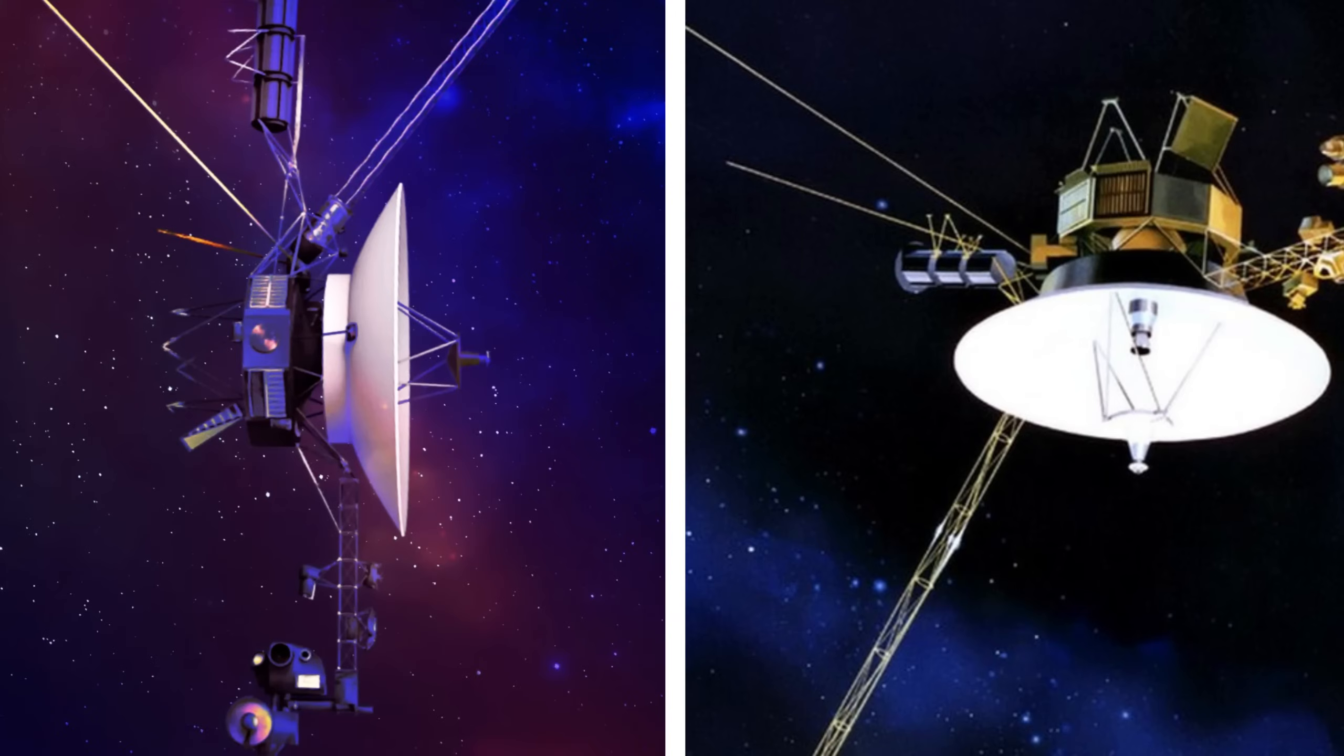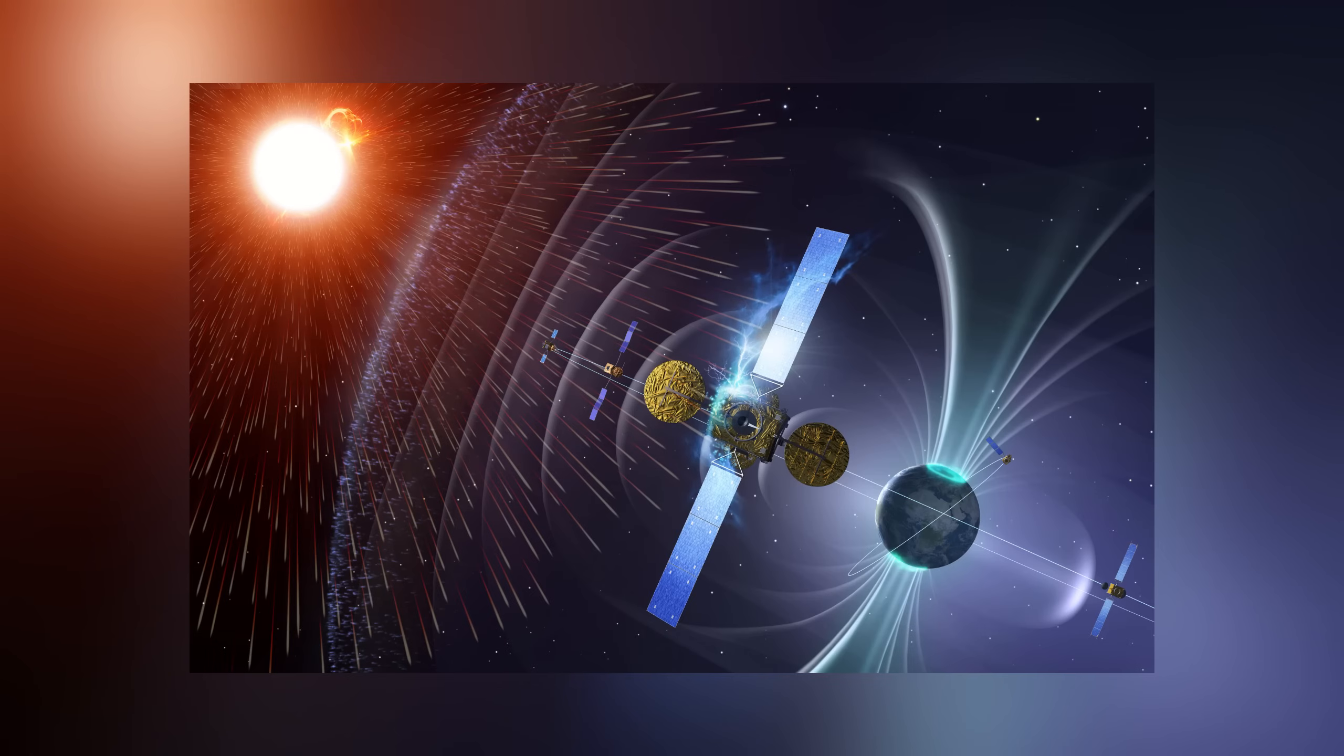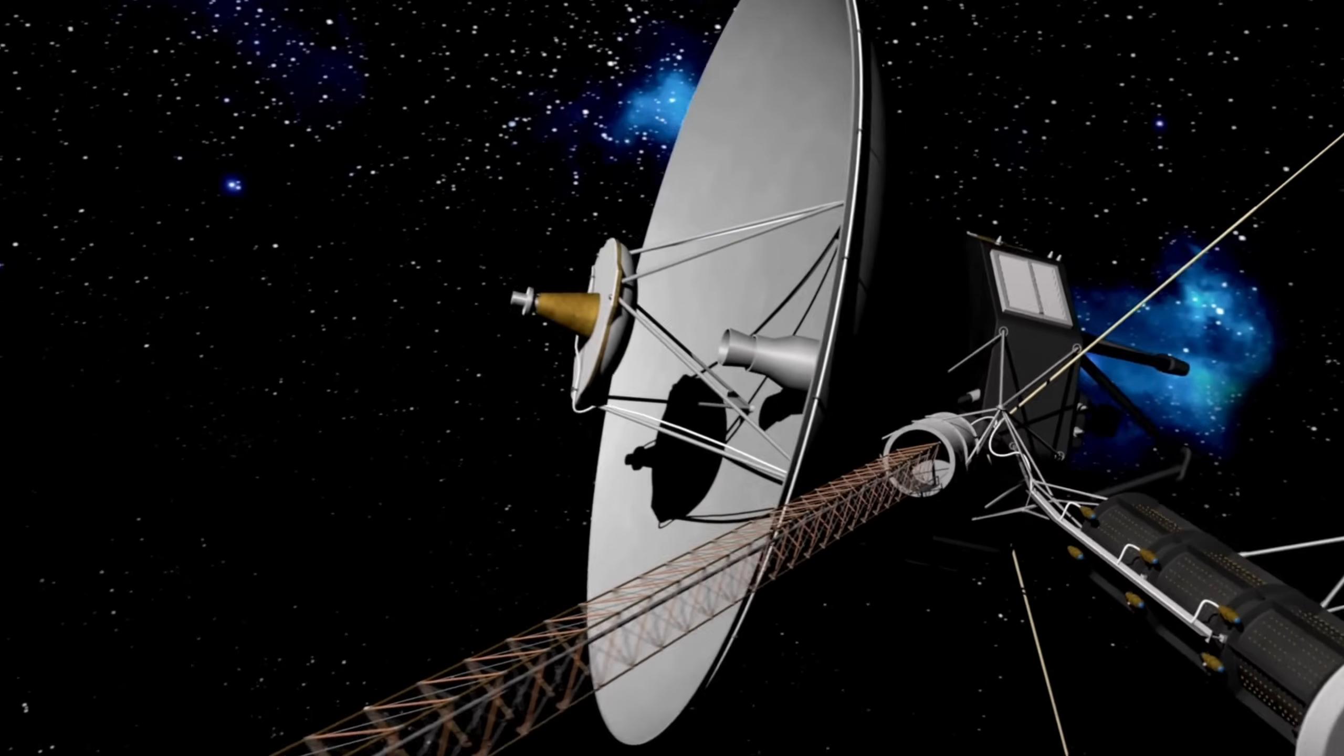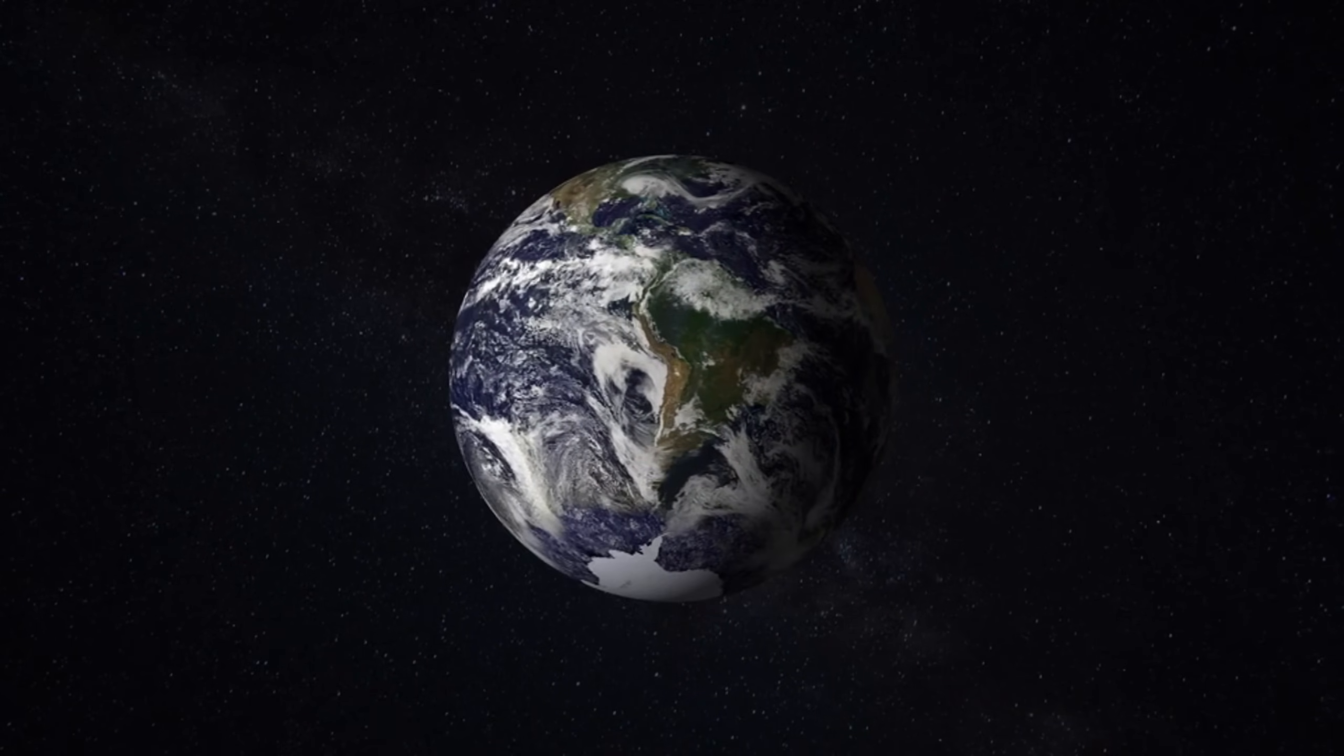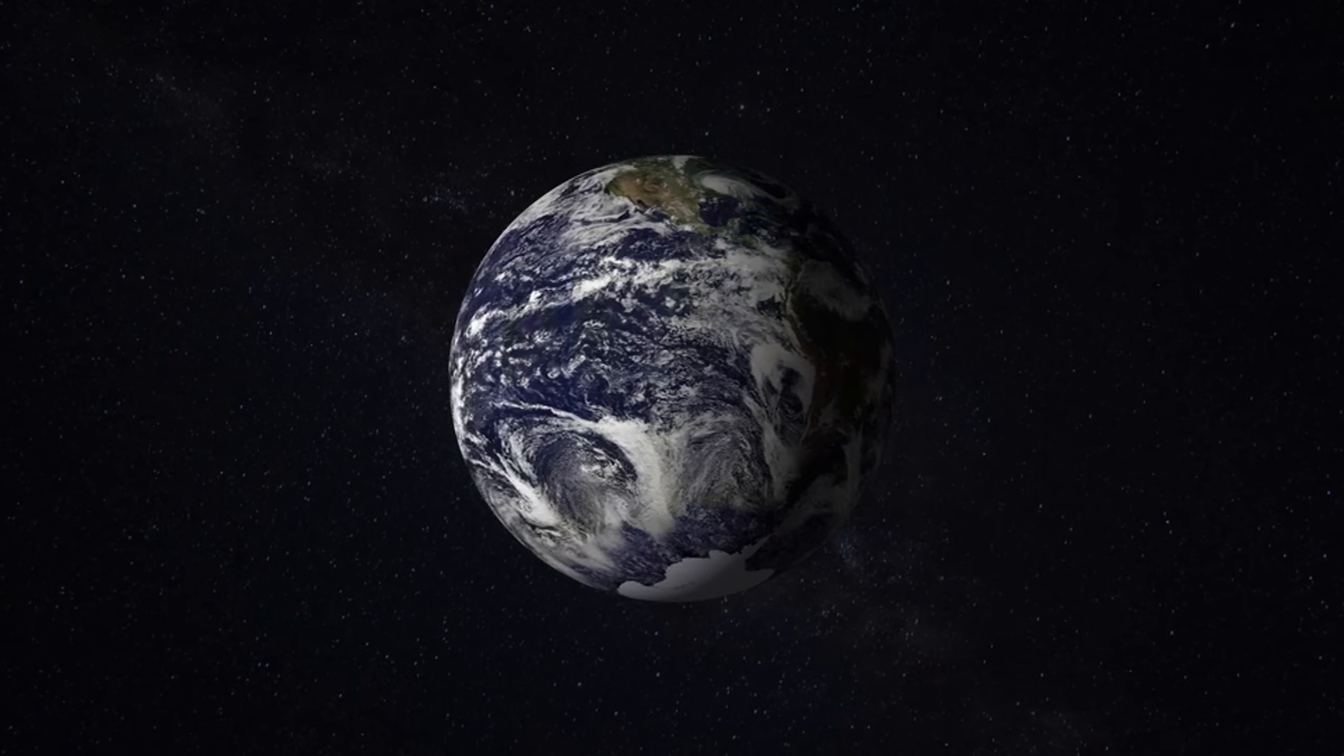Both Voyager 1 and Voyager 2 have now entered interstellar space beyond the heliosphere, where solar wind particles no longer prevail. This boundary, called the heliopause, marks the point where the solar wind's influence diminishes, allowing interstellar particles and cosmic rays to rise considerably. Voyager 1 is now more than 14 billion miles from Earth, with Voyager 2 trailing at around 12 billion miles. Despite their vast distance, both probes continue to send data back to Earth, although transmissions can take more than 21 hours one way.